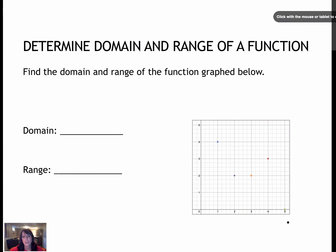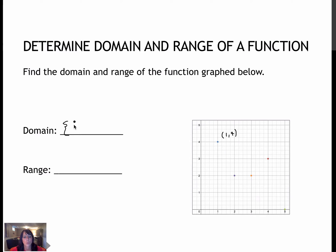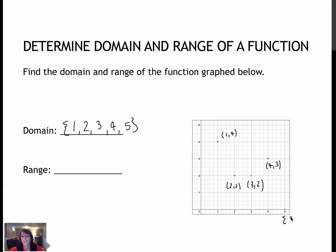This next example is a discrete function because we don't have lines, we just have points — five points. The domain would be the x values of those points, so I'll just list them. I have x values of one, two, three, four, and five. The range is all of the y values: my lowest y value is zero, next is two — which appears twice but I only write it once — then three, and then four. So that's my domain and my range.